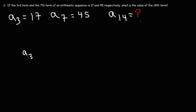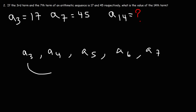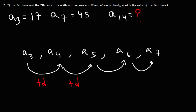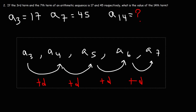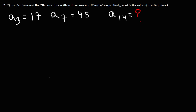Let's say this is the 3rd term, the 4th term, the 5th term, the 6th term, and the 7th term. To go from the 3rd to the 4th term, we need to add one common difference. To go from the 4th to the 5th, we need to add another common difference. Note that we need to add four common differences to go from the 3rd term to the 7th term, because 7 minus 3 is 4. So understanding that will help us find the common difference easily.